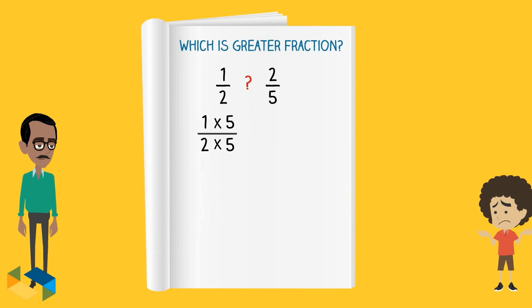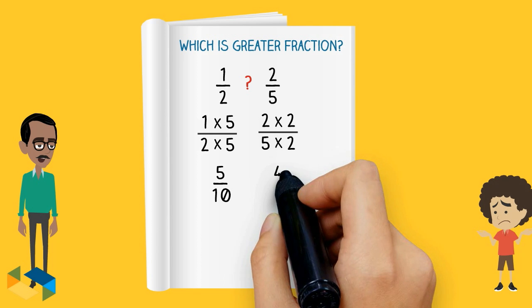To solve this problem, just multiply by 5 the numerator and denominator in the fraction 1 upon 2. This gives us the equivalent fraction 5 upon 10. And here, multiply the numerator and denominator in the fraction 2 upon 5 with 2 to get 4 upon 10.